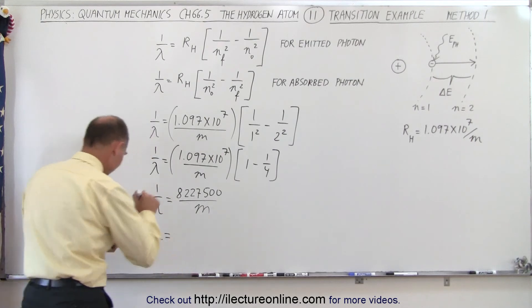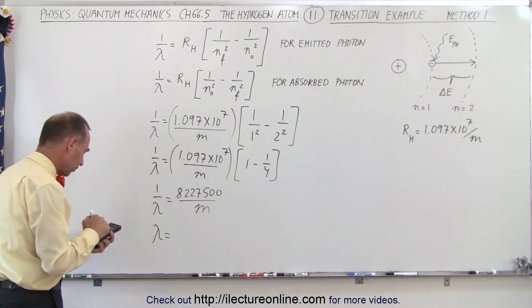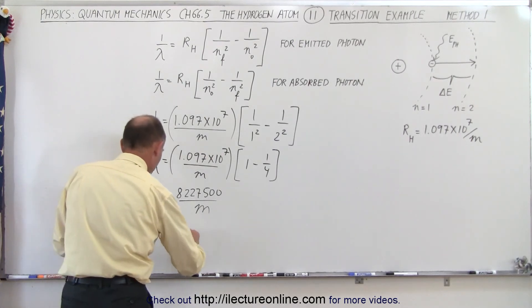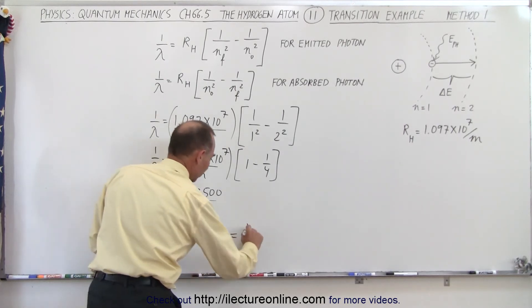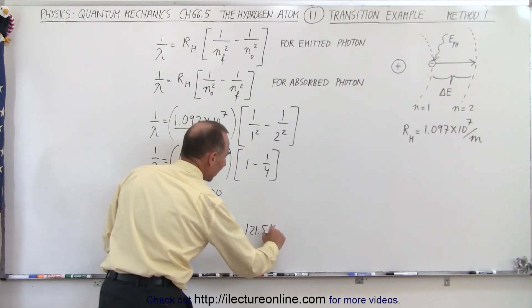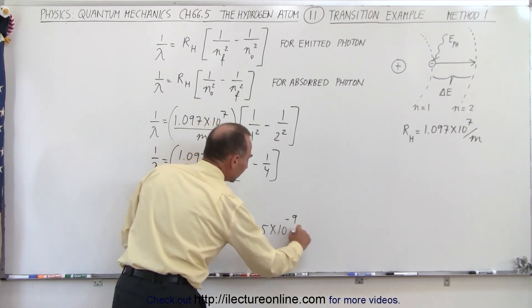So lambda is going to be the inverse of that. So we find the inverse and it's going to be 121.5 nanometers, which is 121.5 times 10 to the minus 9 meters.